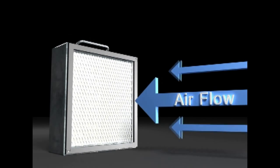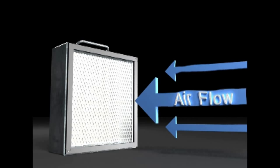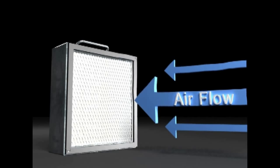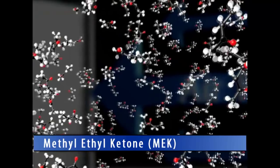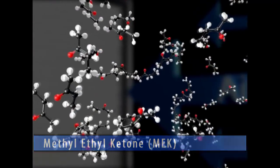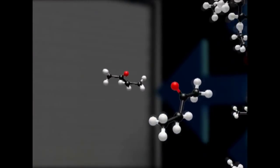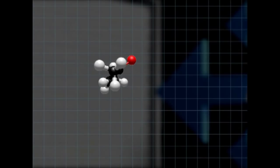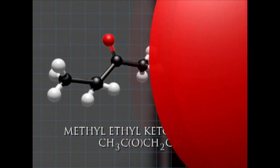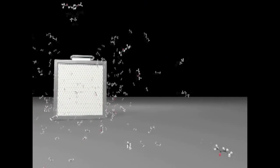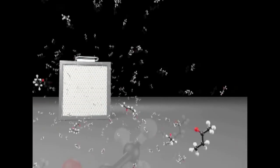As air is forced through the activated carbon filter, gases will become adsorbed. In this example, we will use MEK. This is how MEK is adsorbed by granular carbon.